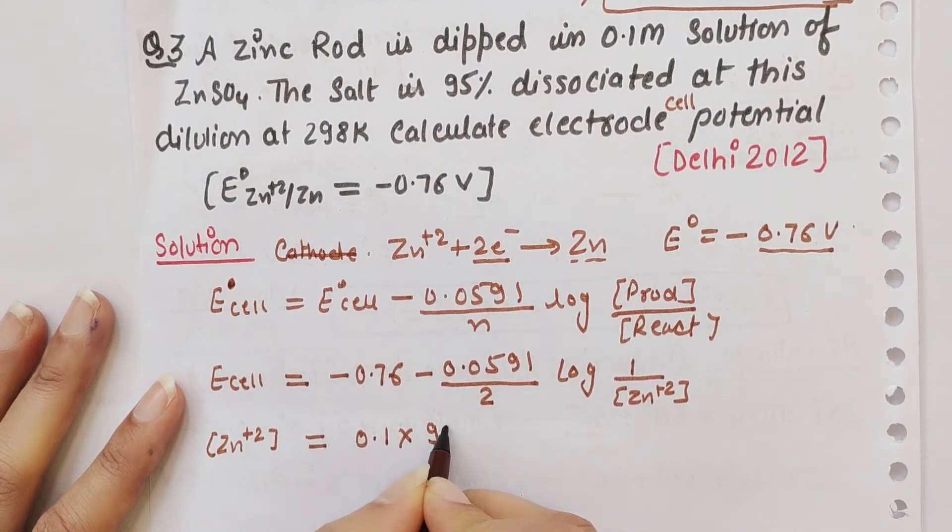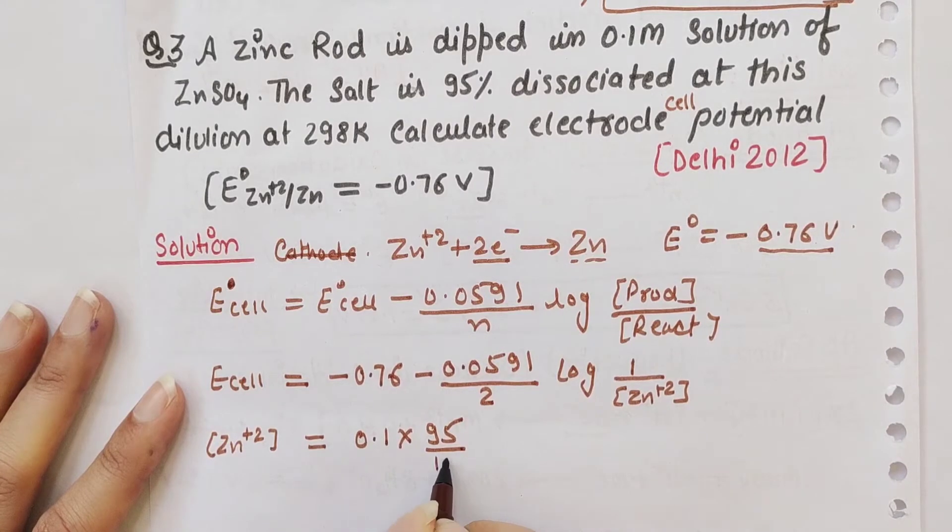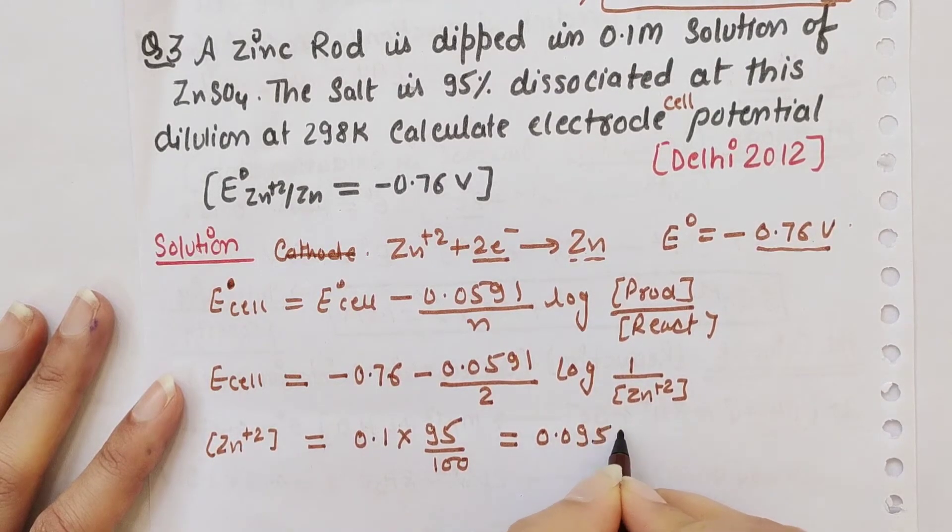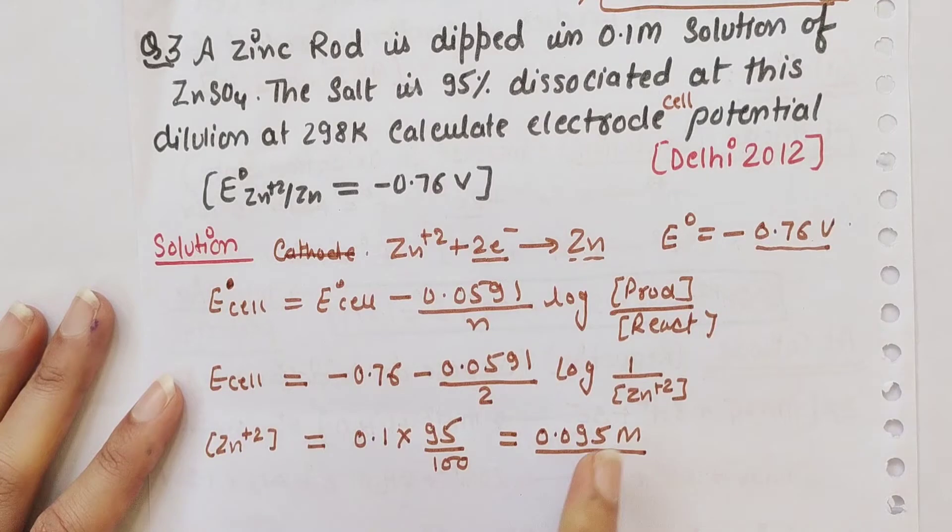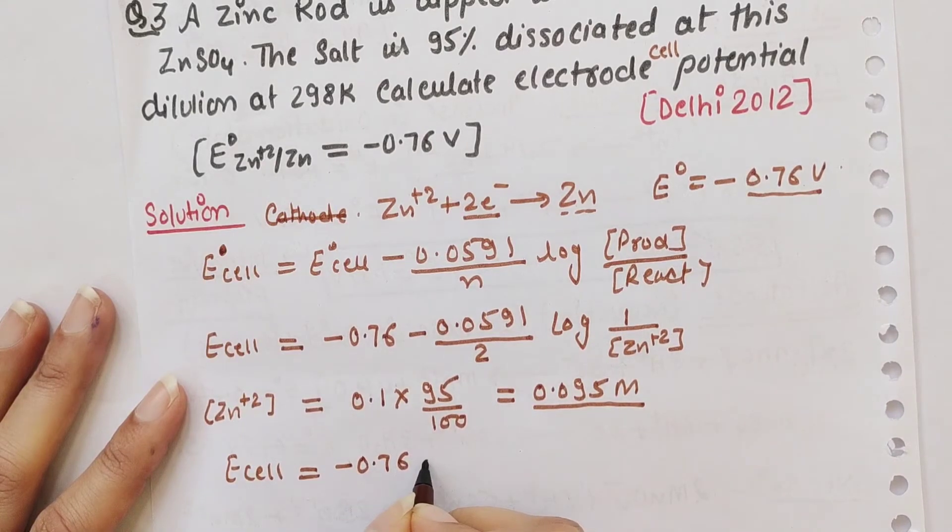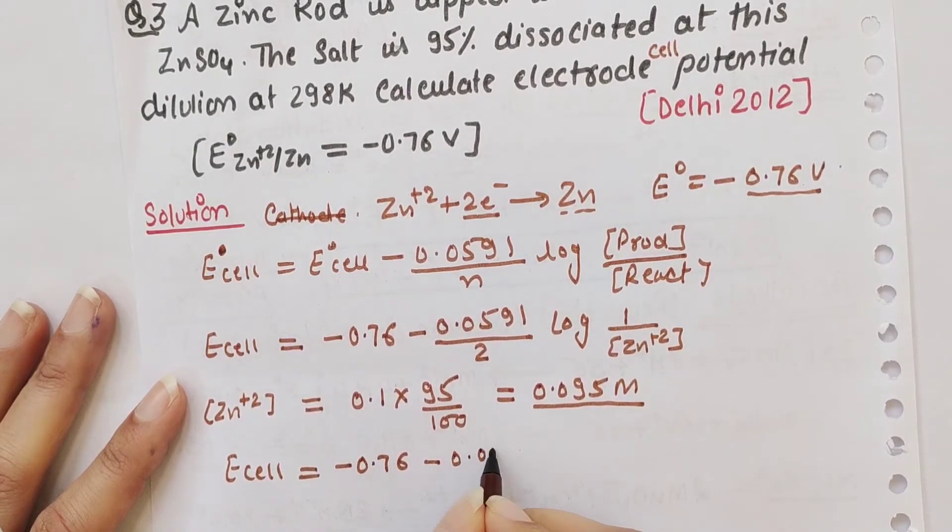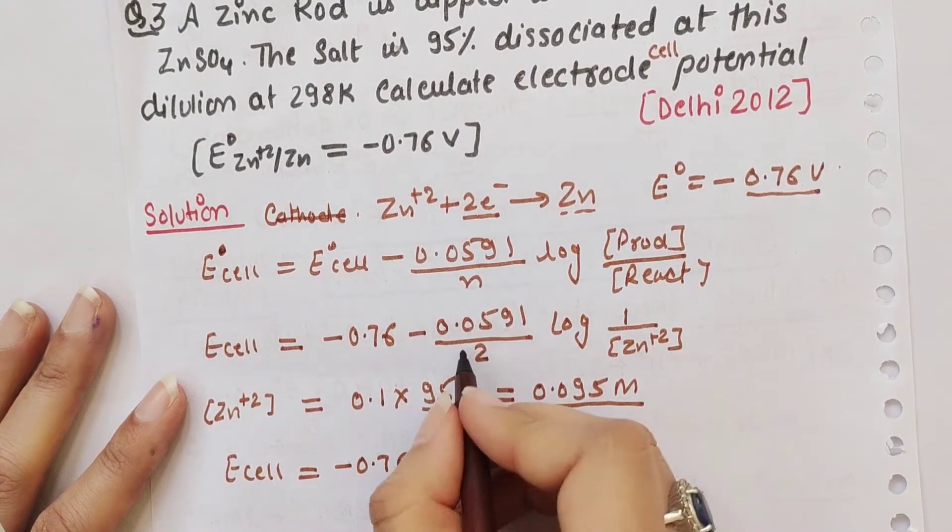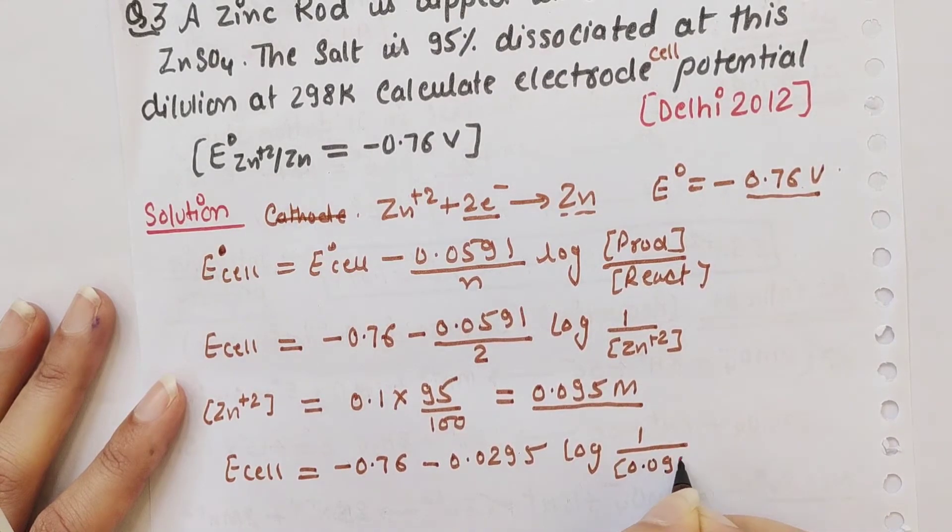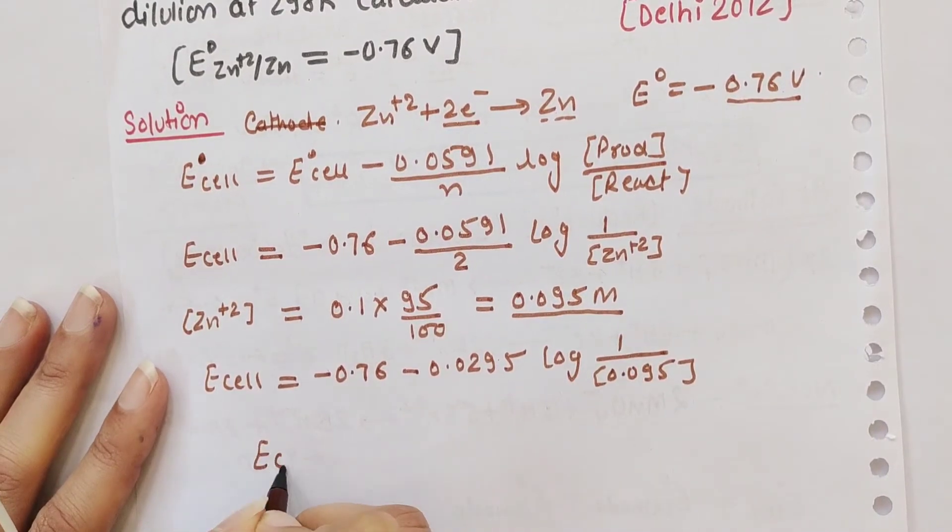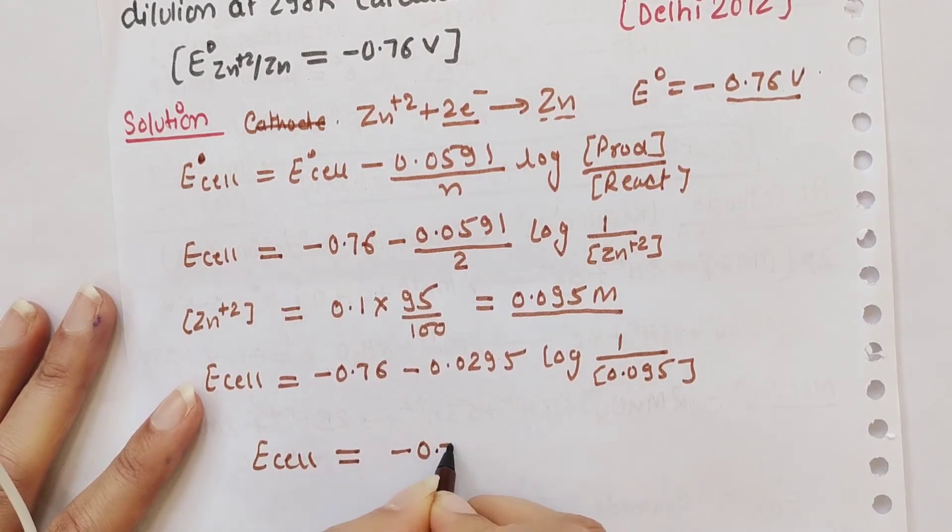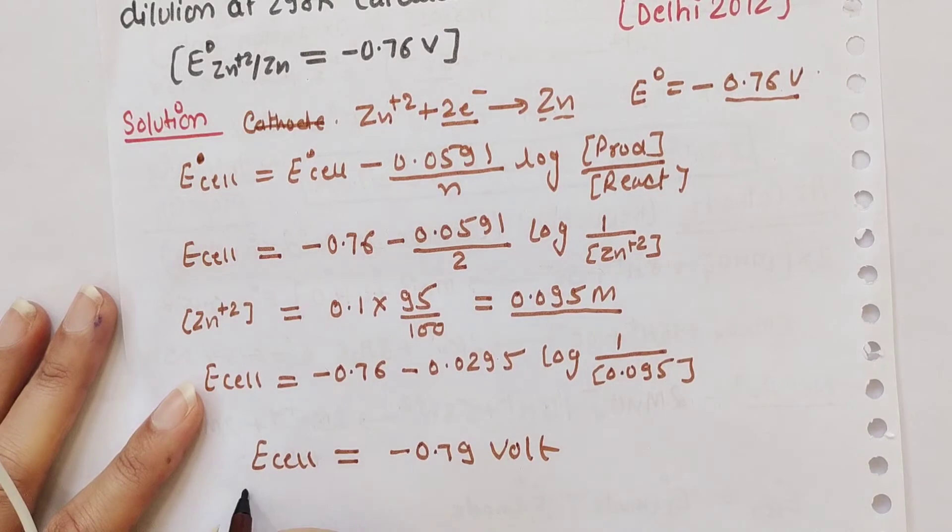Since 95% of the salt dissociates, the concentration of Zn²⁺ is 0.1 × 95/100 = 0.095 molar. This is the concentration we use in the Nernst equation.